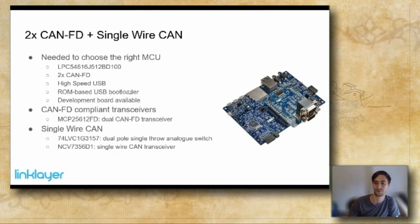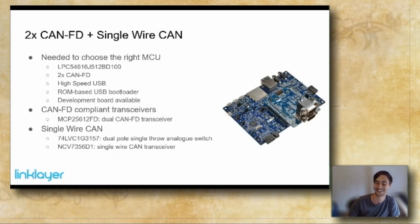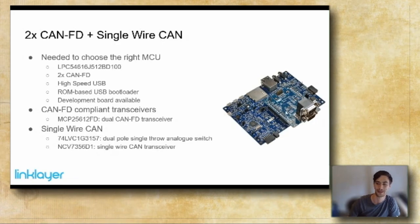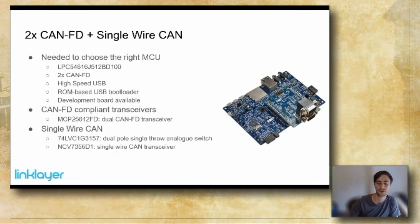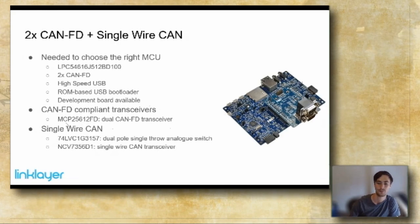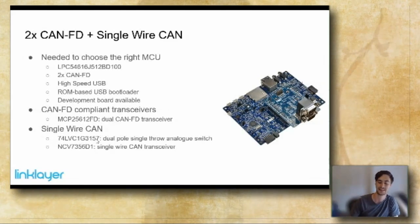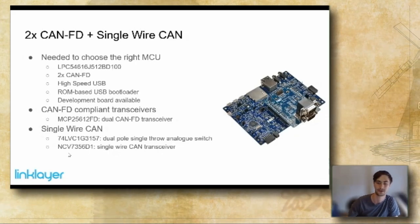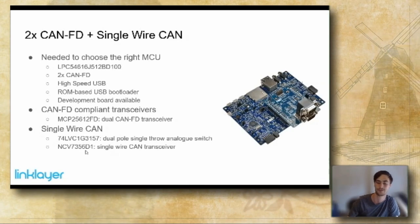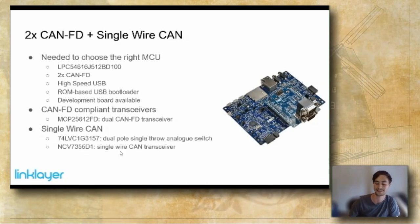There was also a development board available from NXP that was basically my product — it had that chip plus a dual CANFD expansion that could slide on top, and it was around $200. For the CANFD transceivers, I ended up with the MCP25612FD from Microchip — a dual CANFD transceiver. For single-wire CAN, I used two dual-pole single-throw analog switches to switch the CAN signals between the high-speed CANFD transceiver and the NCV7356D1 single-wire CAN transceiver from ON Semiconductor.